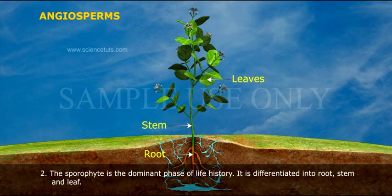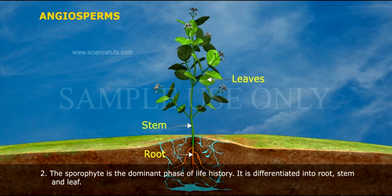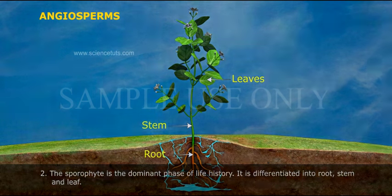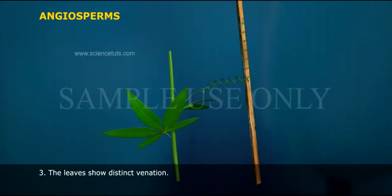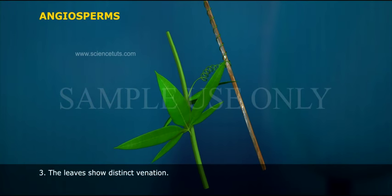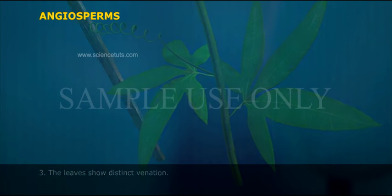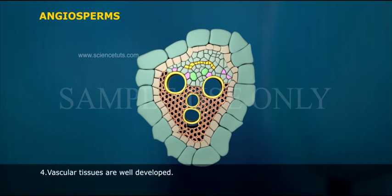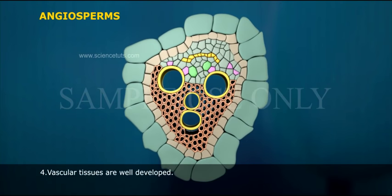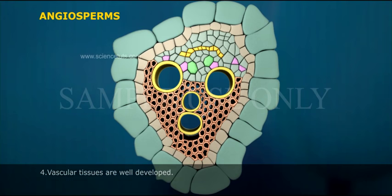Second, the sporophyte is the dominant phase of the life history, differentiated into root, stem, and leaf. Third, the leaves show distinct venation. Fourth, vascular tissues are well developed.